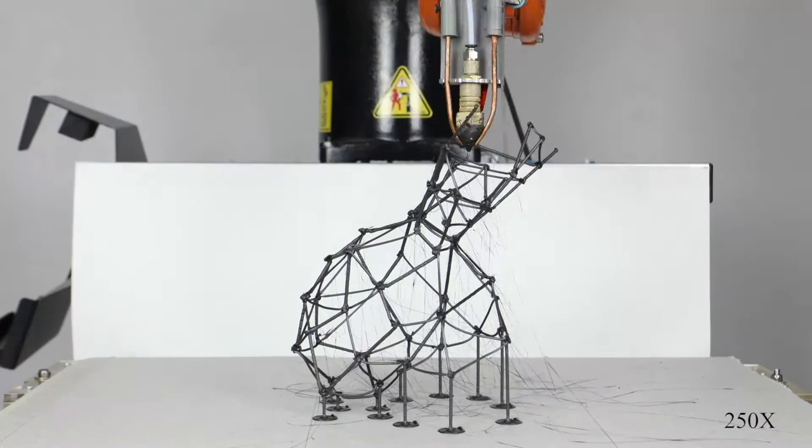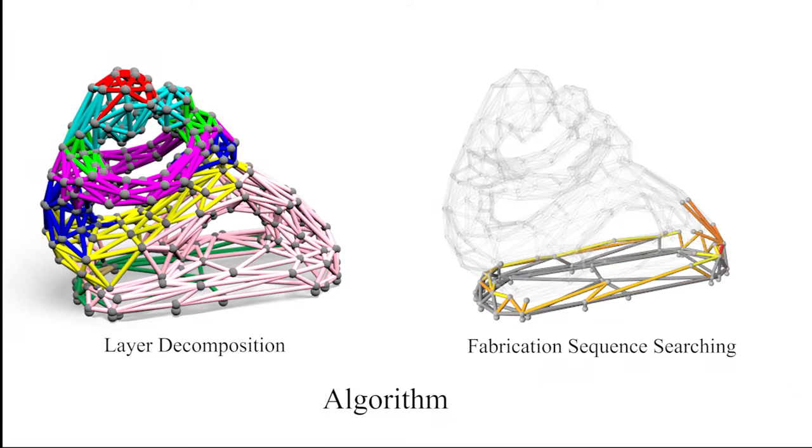To solve this challenging problem, we develop a divide-and-conquer strategy that first decomposes the input frame shape into several layers via a constrained sparsity optimization method.